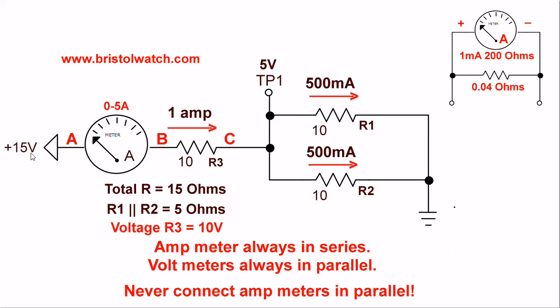I have a 15 volt supply, here's my positive side and negative ground. I have two 10 ohm resistors in parallel, and that is in series with a 10 ohm resistor R3, which is in series with an ammeter.